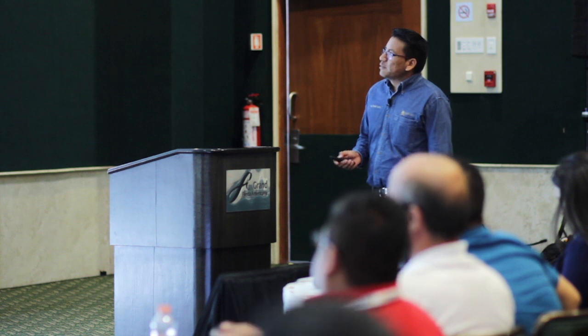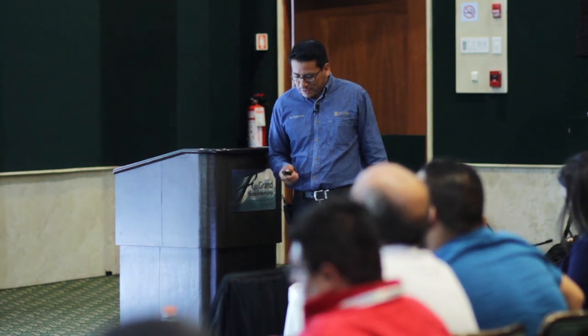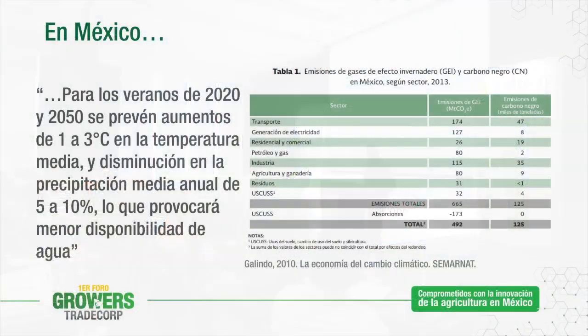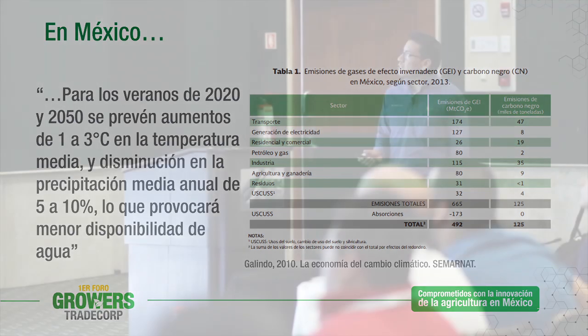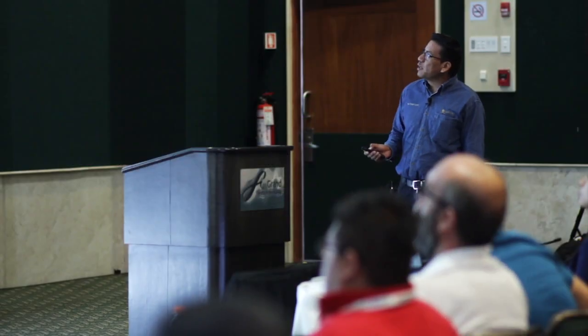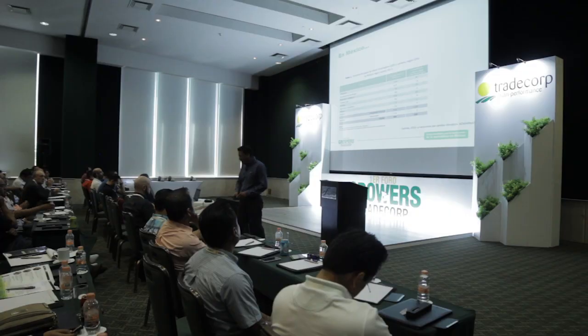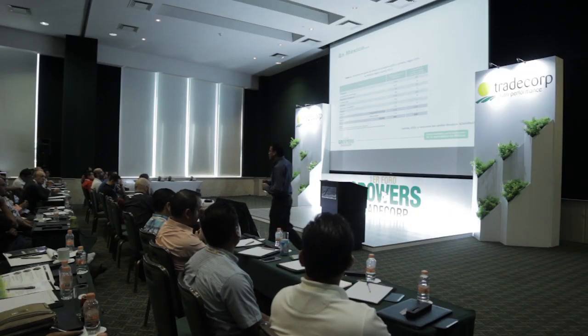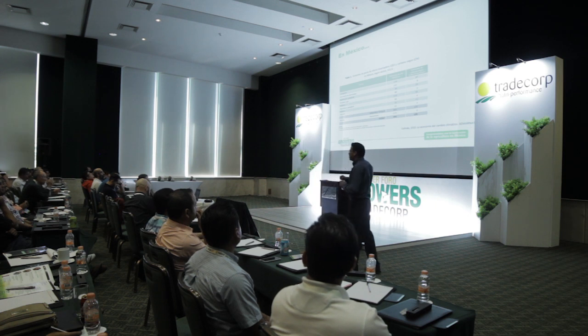Para el caso de México, tenemos diferentes sectores que favorecen la emisión de CO2: principalmente transporte, generación de electricidad, el área de construcción, y otros, entre ellos la agricultura. Para la agricultura se habla de que el gas de efecto invernadero que más tiende a emitir es el óxido de nitrógeno.